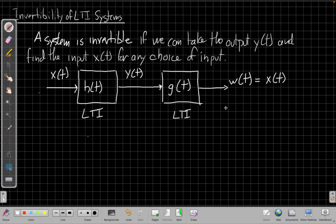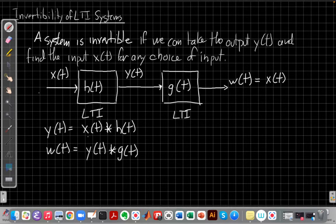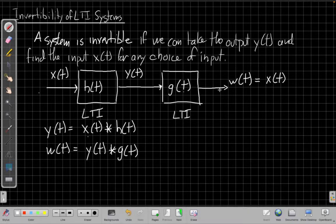But let's see how that means for convolution. Well, first, the first output, y(t), would have to be x(t) convolved with h(t). And then we say, well, I took that y, that my second output, w(t) will be y(t) convolved with g(t). Again, because this y is the input here, g is the impulse response, so I convolved the input with the impulse response to get the output, which here is w, and we're trying to say, well, is it equal to x(t)?